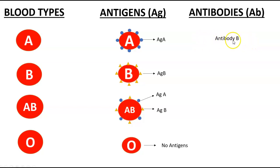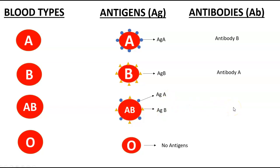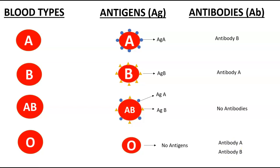Antibody B is designed to kill B antigens. So if you have B blood type, you have the opposite antibody — antibody A — because you don't want to kill yourself, and antibody A is looking to kill A antigens. For AB blood type, it has both A and B antigens, so it has no antibodies, because having antibody A or B would partly kill its own RBCs. And O blood type has no antigens, so it has both antibodies — A and B.